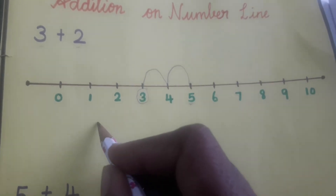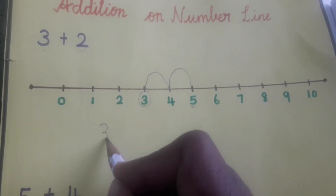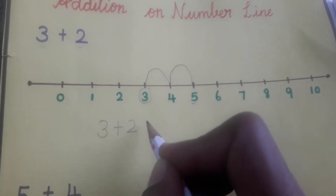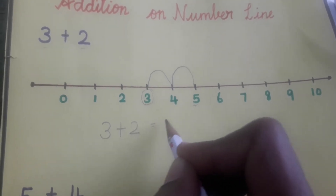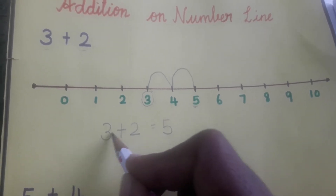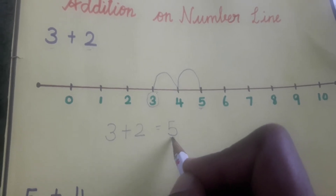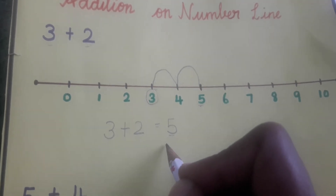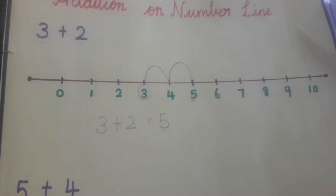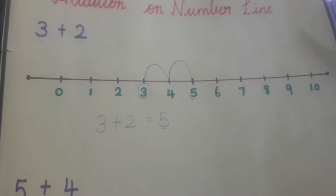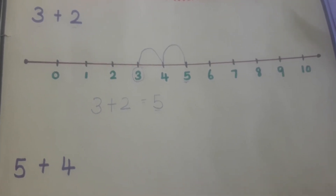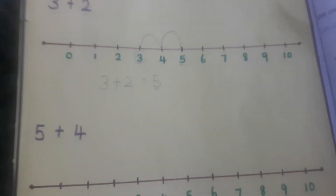This is the answer. When we add 3 and 2, we will get number 5. So 3 plus 2 is equal to 5. Do you understand children how to do addition by using a number line? Let us see some more examples.